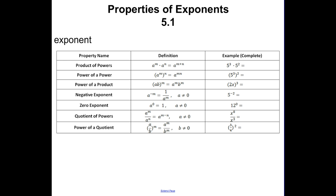Today we're going to talk about chapter 5.1 from Algebra 2, which is the properties of exponents. First thing we should look at is the table that tells you your different properties: product of powers, power of a power, power of a product, negative exponent, zero exponent, quotient of powers, and power of a quotient. This table is in your book, so you don't have to write it down. I'm going to go over some examples.